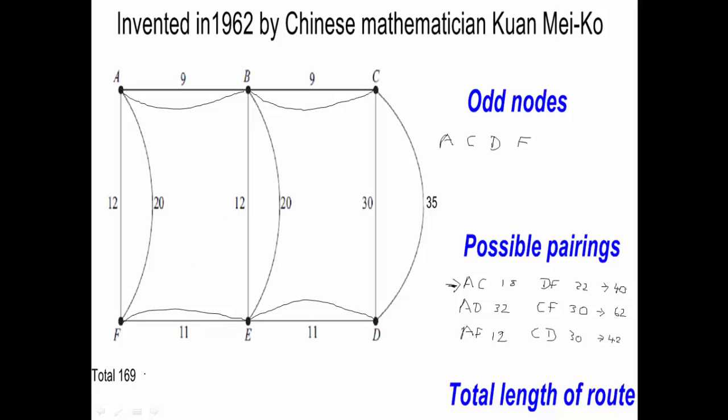So in order to solve this in the best possible way, we would add our cheapest pairing of 40 to 169, giving us a total of 209. So there's the solution. If we start here, maybe start at A, we can now go round the whole graph, including using these extra arcs I've drawn in, for a total of 209. And we can't beat that. That's the total length of the route for solving the route inspection problem.